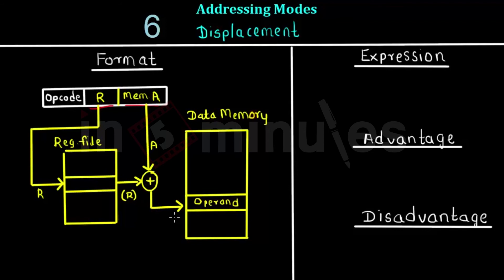This addressing mode varies according to the organization of the processor. The general expression is: the effective address equals the address specified in the instruction plus the value of the register addressed by R.